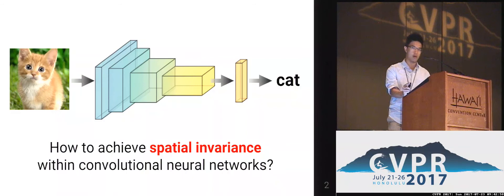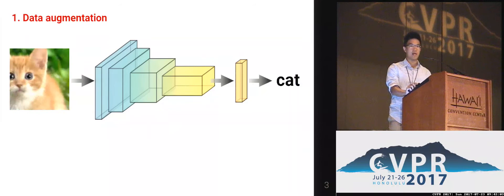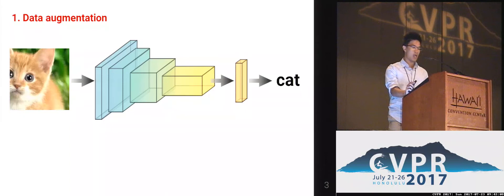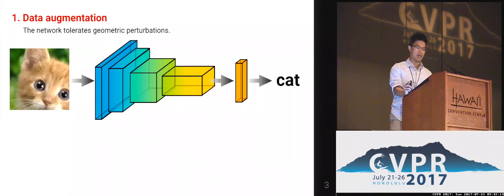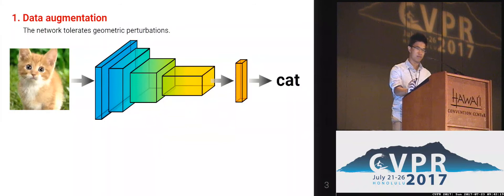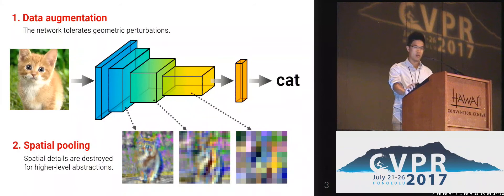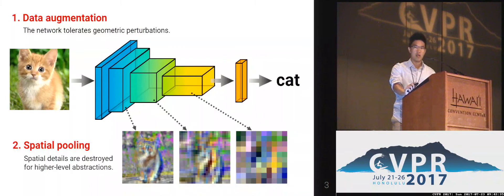One typical way we would do is by data augmentation. Basically, we perturb the data geometrically, and we hope that the network will learn to absorb these perturbations. However, the drawback is that it cannot focus on learning the similar semantics with respect to spatial locations. The second type of operation is spatial pooling. This operation typically reduces the image dimensions to learn higher-level representations, but it also destroys the details for semantic understanding, and it has a very limited range of toleration.